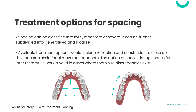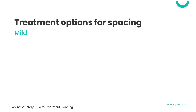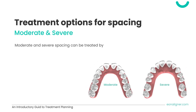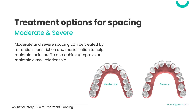Your decision will, of course, be based on the severity of the case. Opening up spaces or leaving them in certain areas in preparation for future restorative work is also an available option. Treating mild spacing cases is straightforward and can be achieved using simple retraction of anteriors and/or constriction of the posteriors. In more advanced moderate and severe cases, mesialization is added to help maintain a good facial profile and a class 1 relationship.